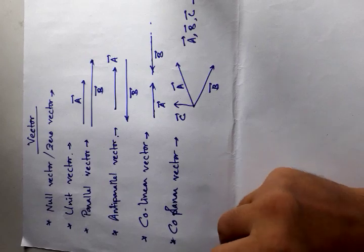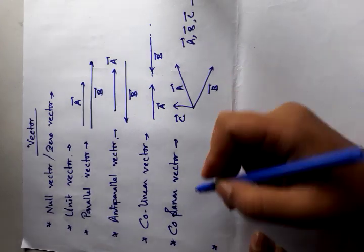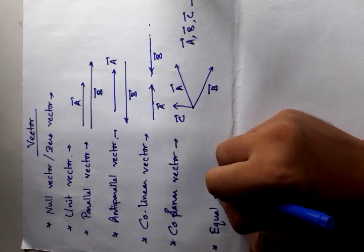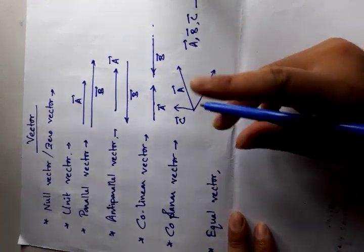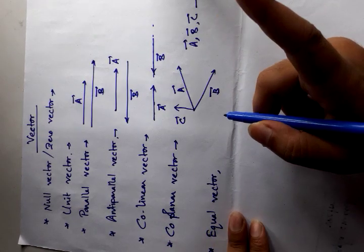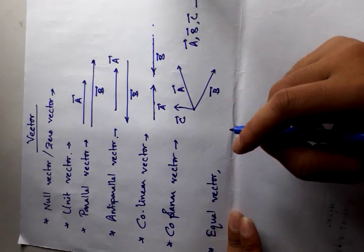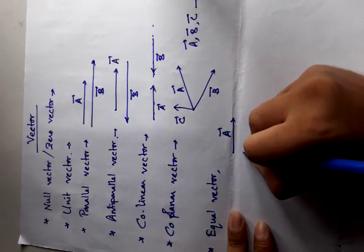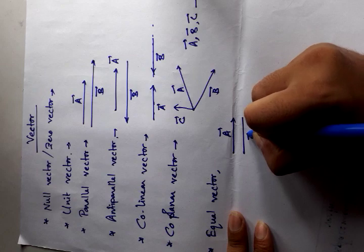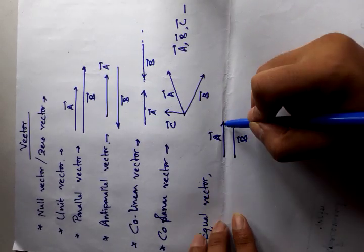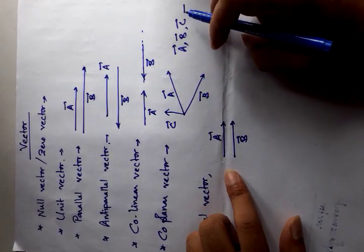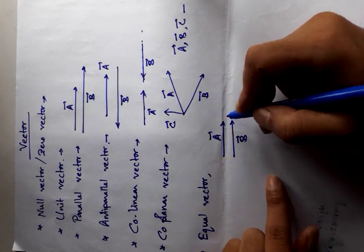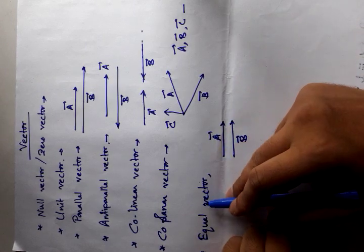Next, equal vector. If two vectors have the same magnitude and direction, then they are called equal vectors. Say A vector is given by this and B vector is given by this. As we see that A and B have the same direction and the same length — that means magnitude is also same — then A and B are called equal vectors.